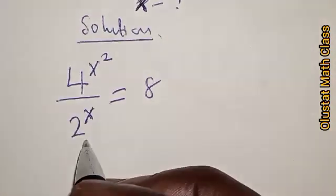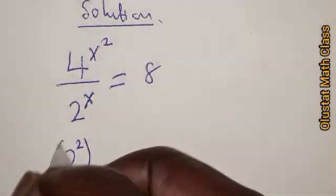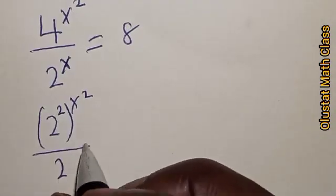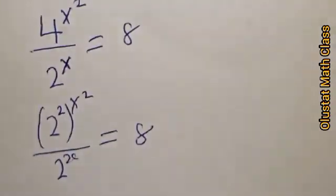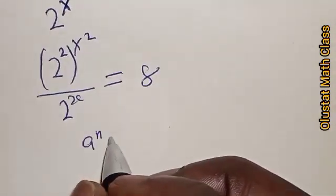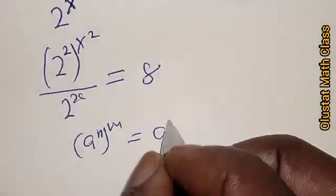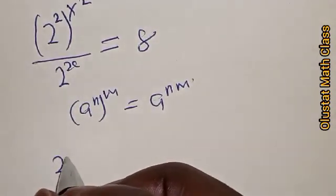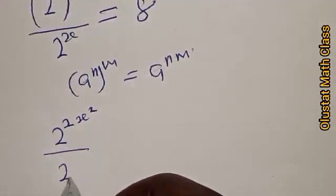Then 4 can be rewritten as 2 raised to power 2, raised to power s squared, divided by 2 raised to power s is equal to 8. Remember, if you have 2 raised to power n, raised to power m, it is the same thing as 2 raised to power n times m. Then we have 2 raised to power 2s squared divided by 2 raised to power s is equal to 8.